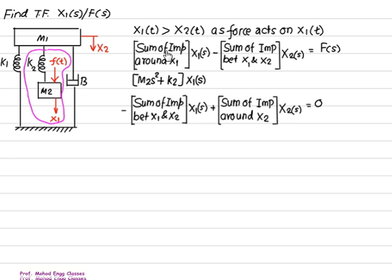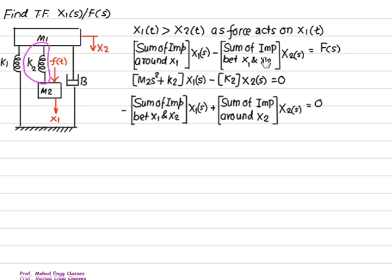The impedance about x1(s): x1 is connected to m2, and x1 is also the displacement of k2. So impedance of m2 is m2·s² and impedance of k2 is k2 — the first term is (m2·s² + k2) multiplied by x1(s). For the sum of impedances between x1 and x2: k1 is between x2 and ground, b is between x2 and ground, but k2 has one displacement x2 and one displacement x1, so there is only one coupling term — k2 multiplied by x2(s) — and this equals F(s).